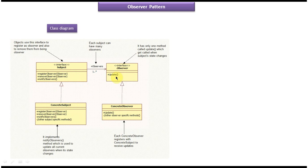Suppose an observer wants to get notifications from the subject whenever some state changes. Then what the observer has to do is it has to register with the subject. To register the observer with the subject, it has to call the register observer method. After some point of time, if a particular observer that was registered in the subject doesn't want to get any notification, then it has to call remove observer so that it can unregister from the subject and won't get any further notification.